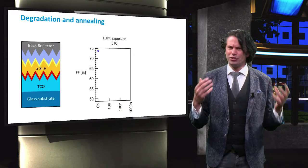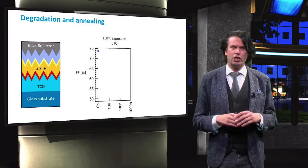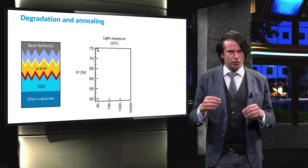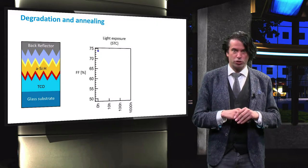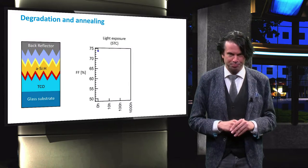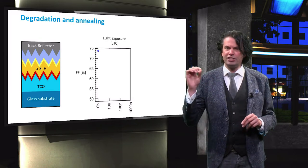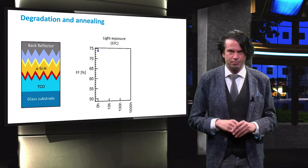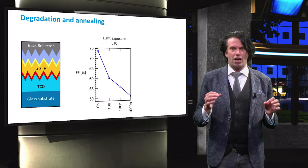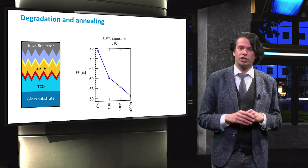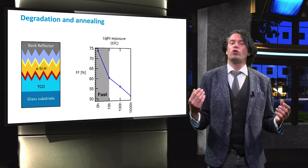But how exactly does the fill factor degrade during this thousand-hour period? The simple thin film solar cell shown on the right, with an amorphous silicon absorber layer, is exposed to light under standard test conditions — one sun illumination, the AM 1.5 spectrum, and a cell temperature of 25 degrees Celsius. Note that the amorphous silicon of this solar cell does not correspond to the state-of-the-art material. The fill factor of this cell after deposition is about 74 percent. Upon exposure to light, the fill factor strongly decreases. We can discern two regions in this graph. The first 10 hours is where the strongest degradation occurs, with the fill factor decreasing from its initial 74 percent to about 60 percent. We can therefore call this the fast region.